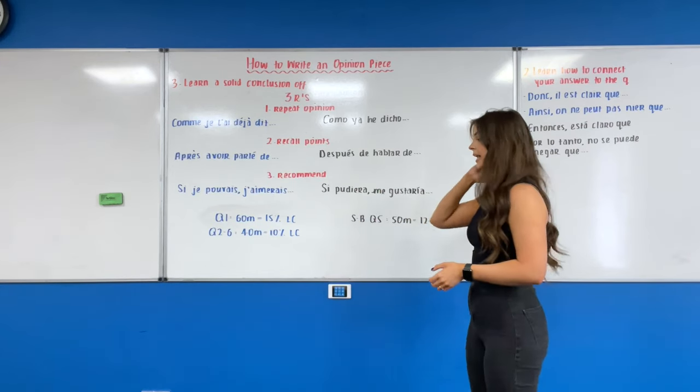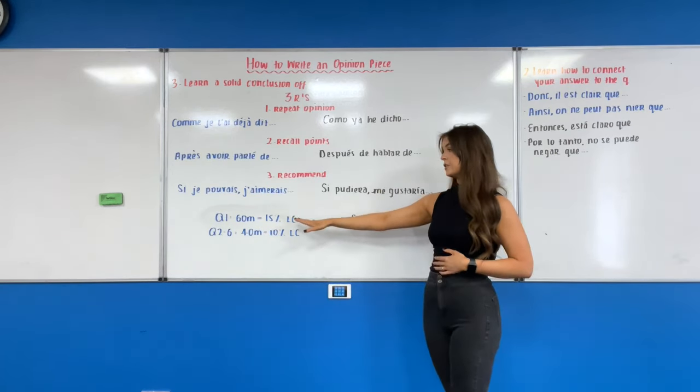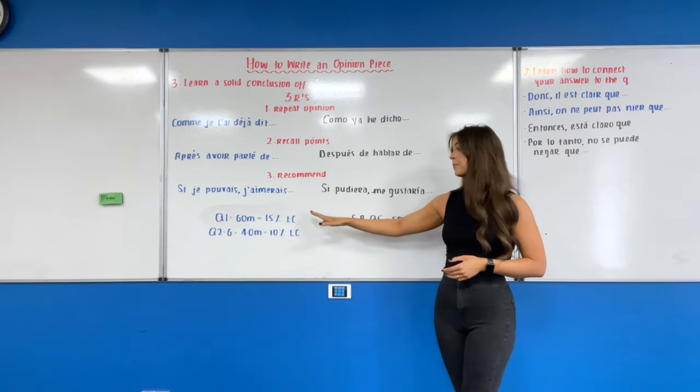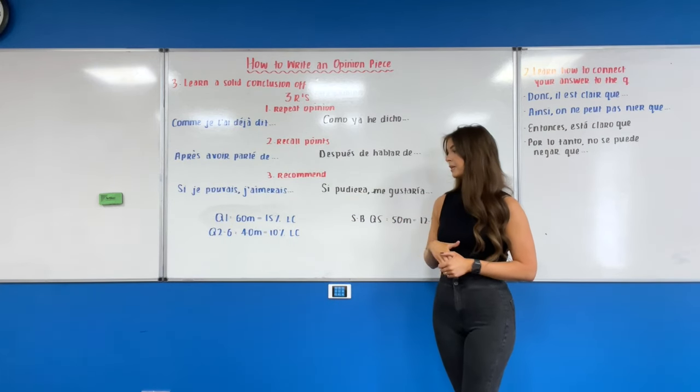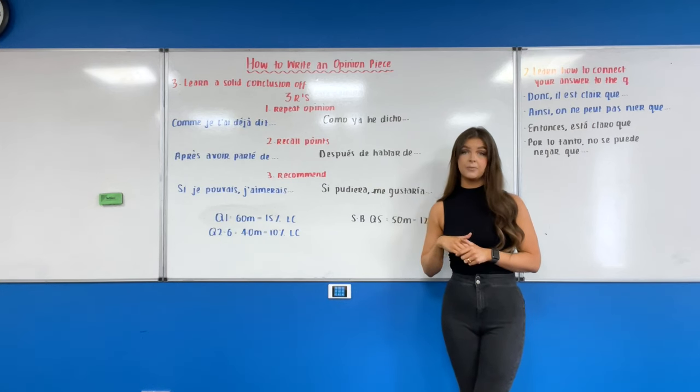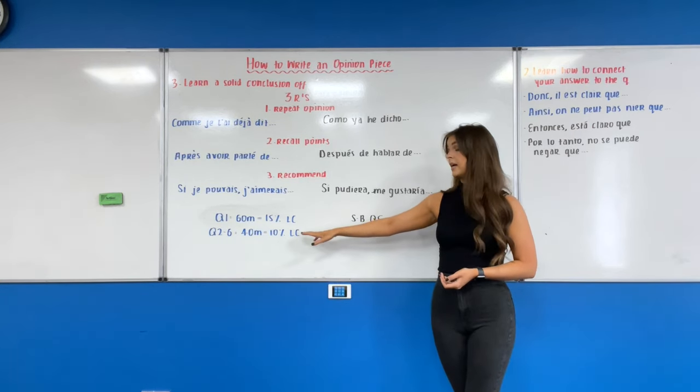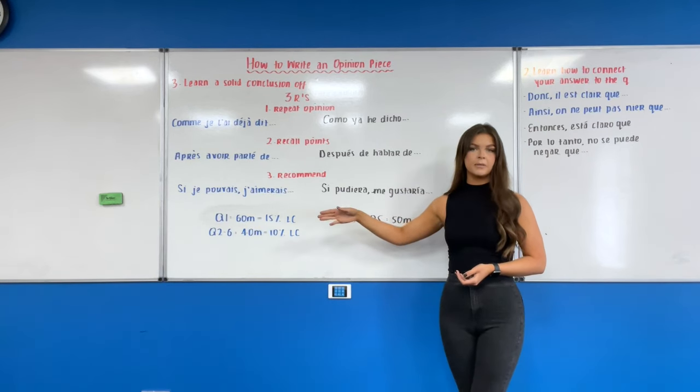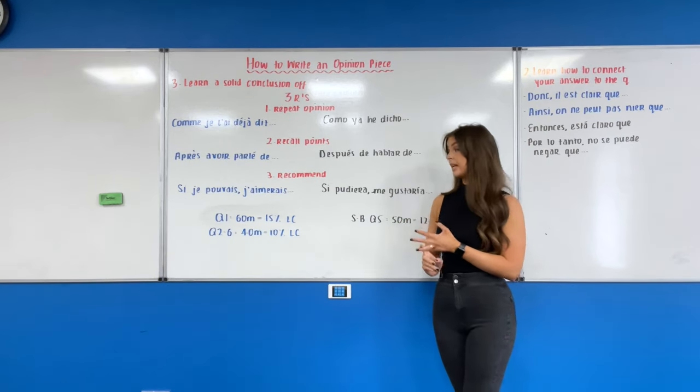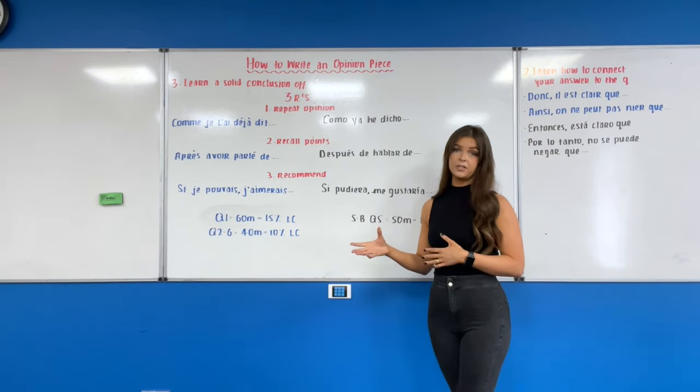To put these questions into perspective for you guys, in French your first question, your question one which is obligatory, is a 60 mark question this year, which is 15% of your final grade. Your Leaving Cert French exam is worth a total of 400 marks. The second question that you do, and again it doesn't have to be an opinion piece, you guys might pick to do like a journal intime or a letter or an email, but regardless the second written question that you do in your French exam this year is worth 40 marks, which we know is 10% of 400.